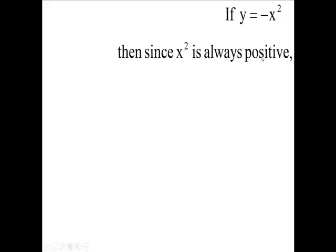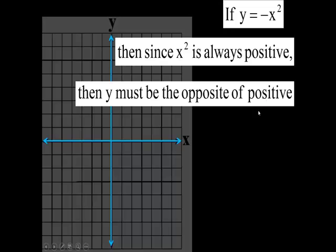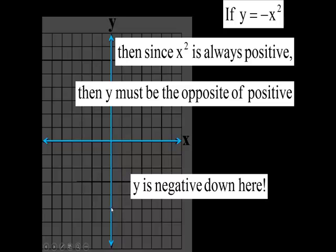Now, another kind of model graph is where y equals negative x squared. x squared is positive, so we're saying y is the opposite of positive. We're saying that y is negative. Where is y negative on this graph? Down here. So if it's y equals negative x squared, it goes down.